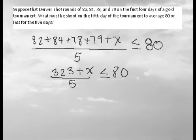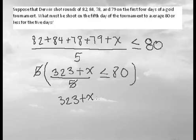Now we have to solve for x so we need to multiply everything times five so we can get rid of the denominator. So here the five cancels out so we get 323 plus x, and don't forget to multiply the right side too. So 80 times five is 400.